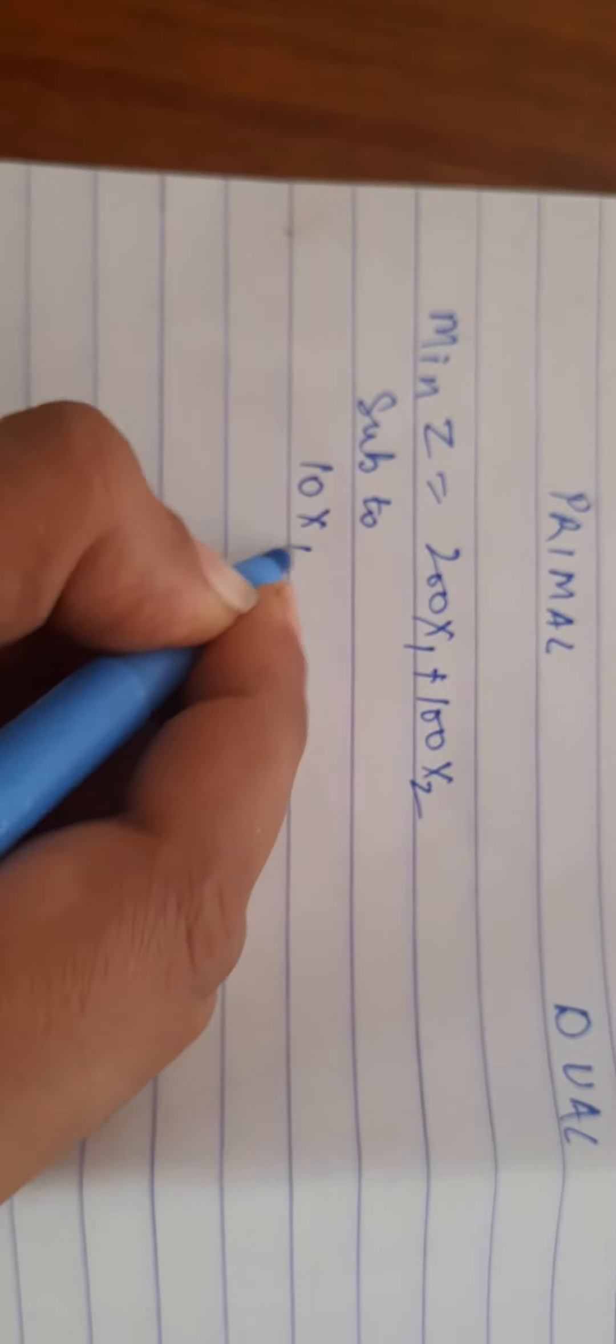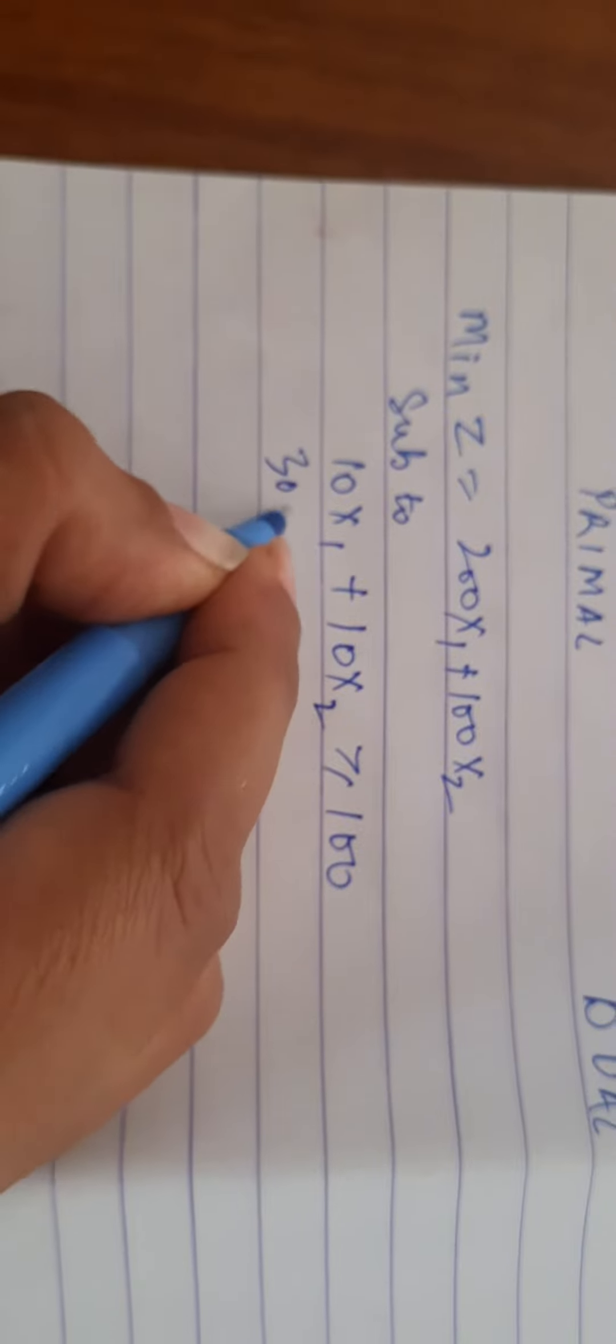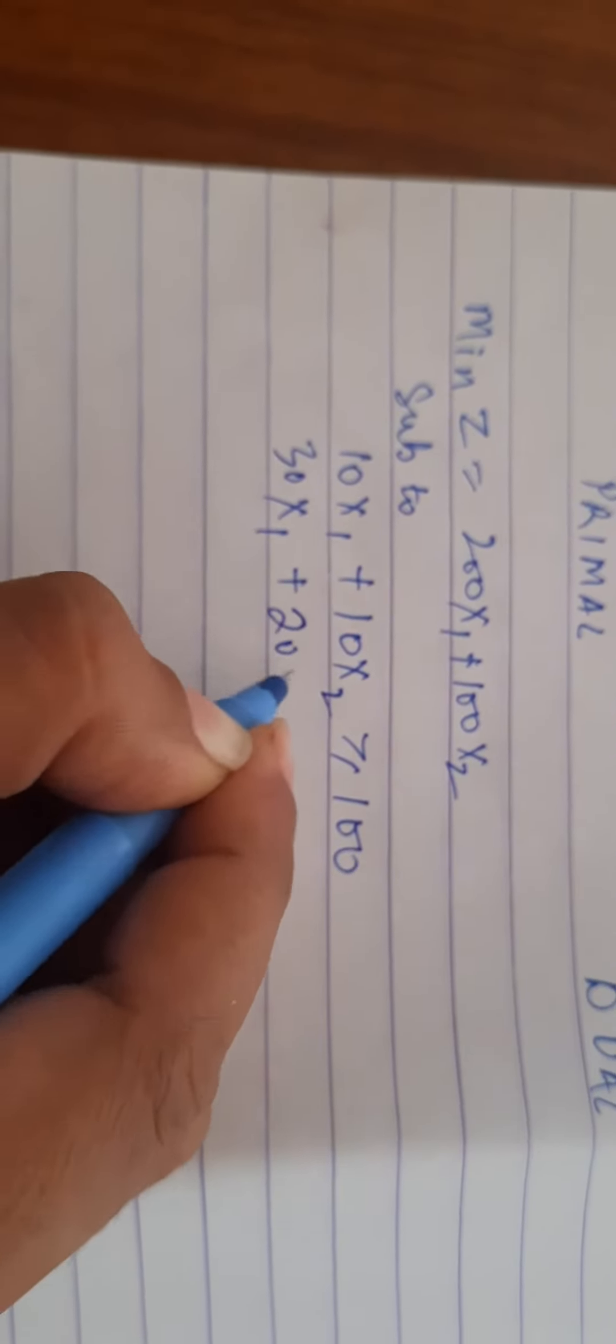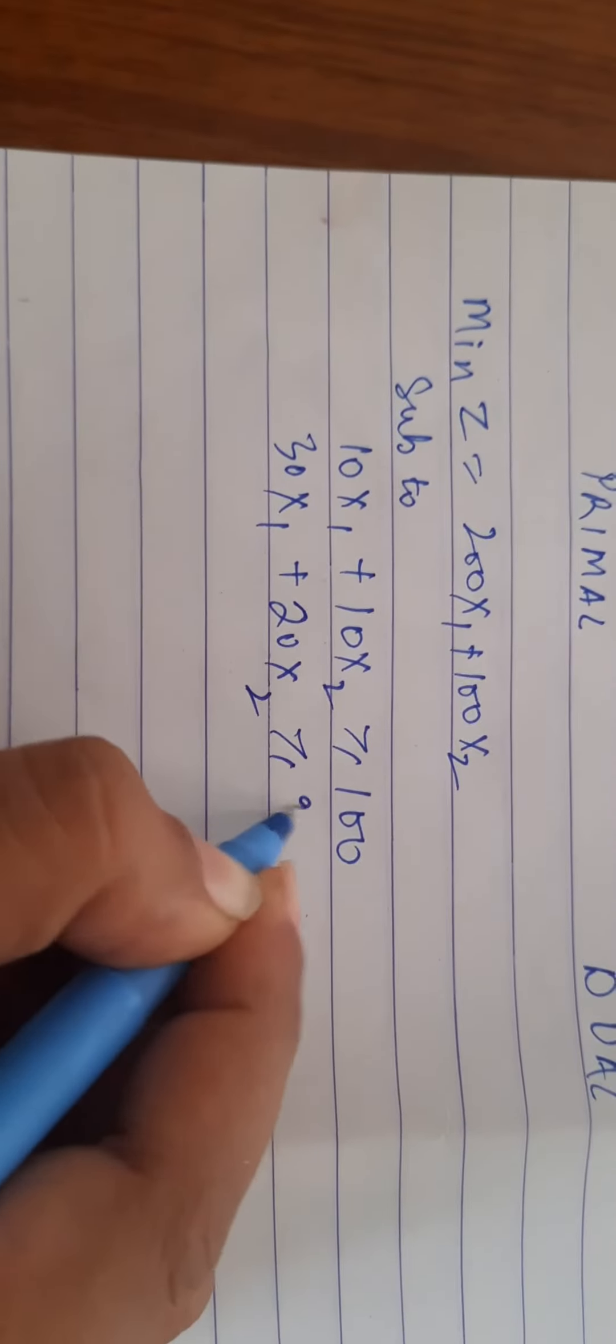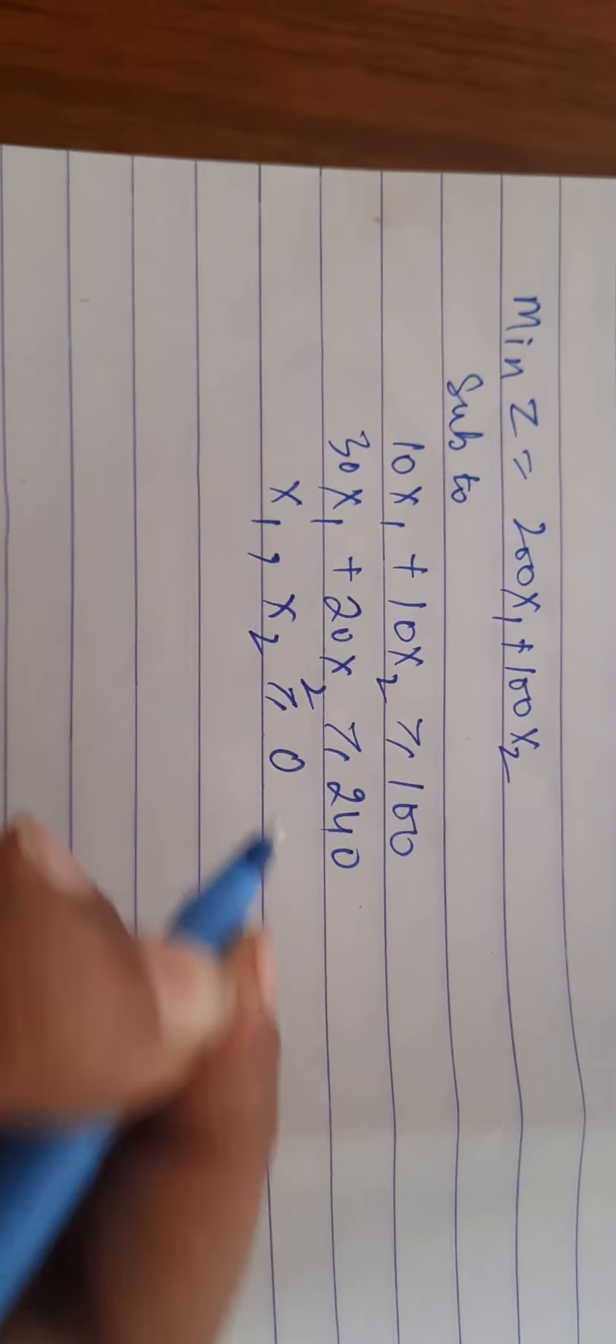That means 10x1 plus 10x2 greater than or equal to 100, 30x1 plus 20x2 greater than or equal to 240, and then we have the non-negativity constraint that is greater than or equal to 0, x1 and x2.